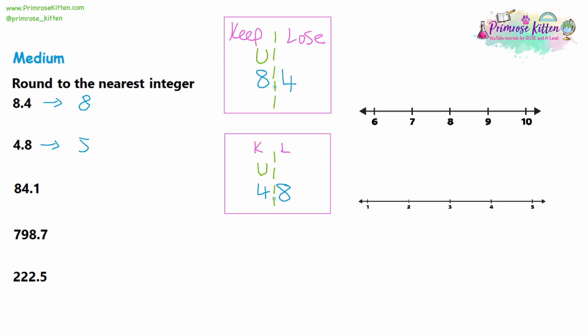Let's talk in more detail about rounding up and rounding down using a number line. For 8.4, the answer was 8. On a number line, 8.4 is just before halfway between 8 and 9, so it's closest to 8. For 4.8, if 4.5 is halfway between 4 and 5, then 4.8 is even further along towards 5. You can see that 4.8 is closer to 5 than to 4. So the rule is: if the first number you're losing is 5 or larger, round up because it will be closer to the larger number. If it's less than 5, round down because it will be closer to the smaller number.